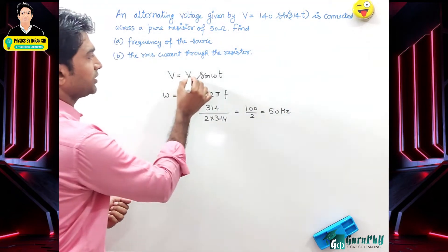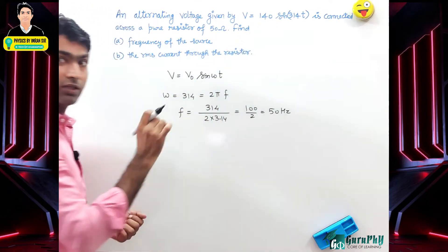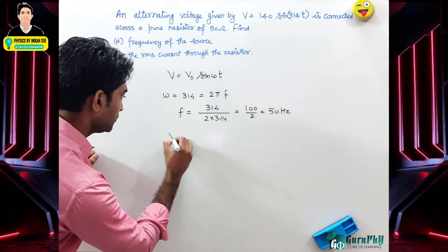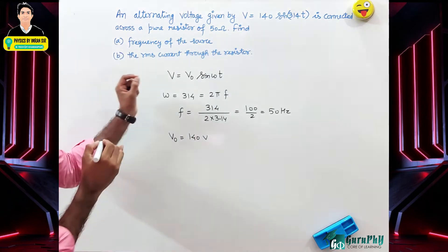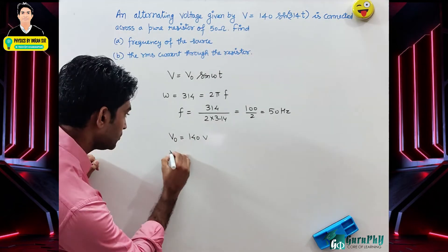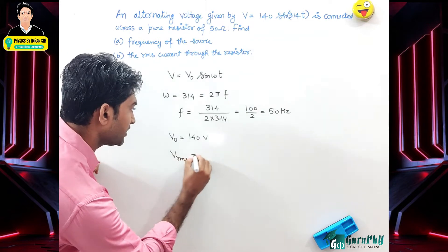We have voltage amplitude V₀ = 140 volts. However, we need RMS current, so it's clear that Vᵣₘₛ = V₀/√2 = 140/√2.